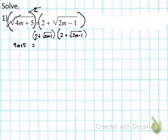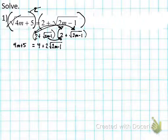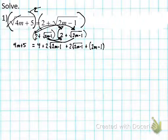So we're squaring itself — we have to FOIL. Two times two is four. Two times square root of (2m − 1) is positive 2√(2m−1). Then inside: square root of (2m−1) times two is also positive 2√(2m−1). Then the last: square root of (2m−1) times square root of (2m−1) is positive (2m − 1), because when you square a square root, the square root cancels out.